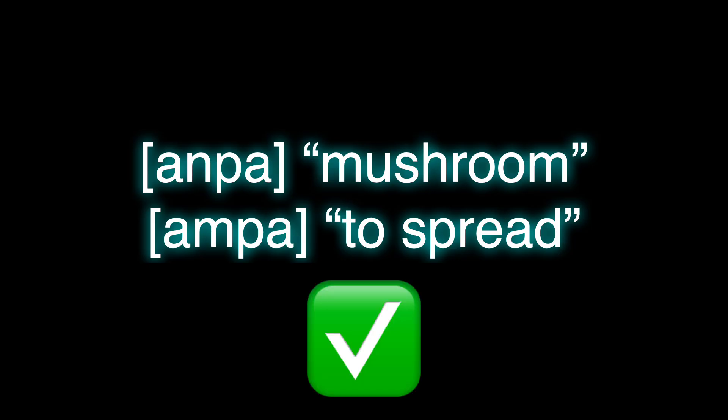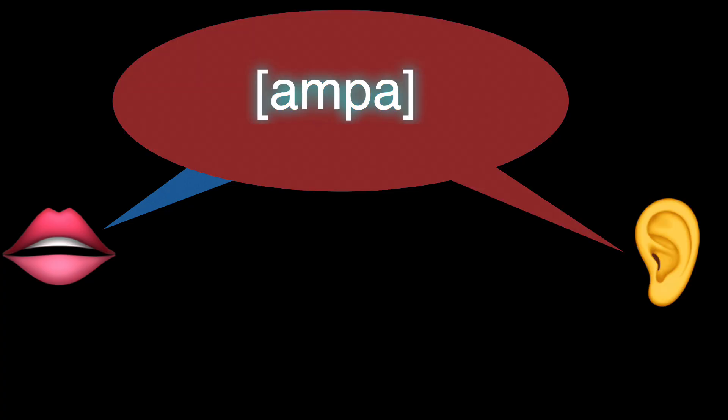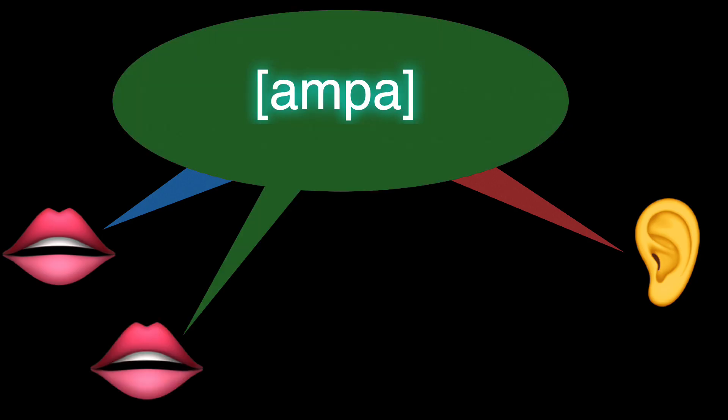That doesn't mean you couldn't have a language where 'anpa' with an N means mushroom and 'anpa' is a verb meaning to spread. Of course you could — it's entirely possible in a natural language or a conlang, it's just not as usual. The more typical situation is where there simply doesn't happen to be a word 'ampa.' Speaker A says 'anpa' with an N, speaker B hears 'ampa,' speaker C starts saying 'ampa,' and there's no miscommunication because there's only one word. People mishear M, they repeat M, and so on.